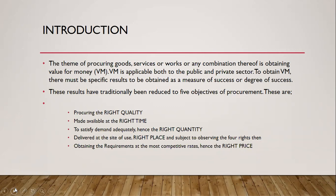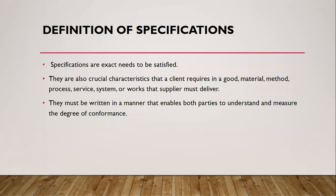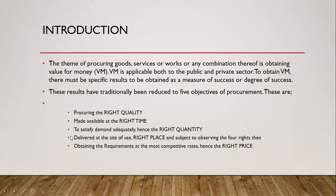When you are specifying goods you need to get value for your money. Value for money is applicable both in the public sector and private sector. The essence is to ensure that what you bring into the organization is something that is going to be good to it. This is reduced to five objectives of procurement: the right quantity, made available at the right time, delivered at the right place, and at the right price. Price is very critical when it comes to specification because you want to reduce the cost of your organization.